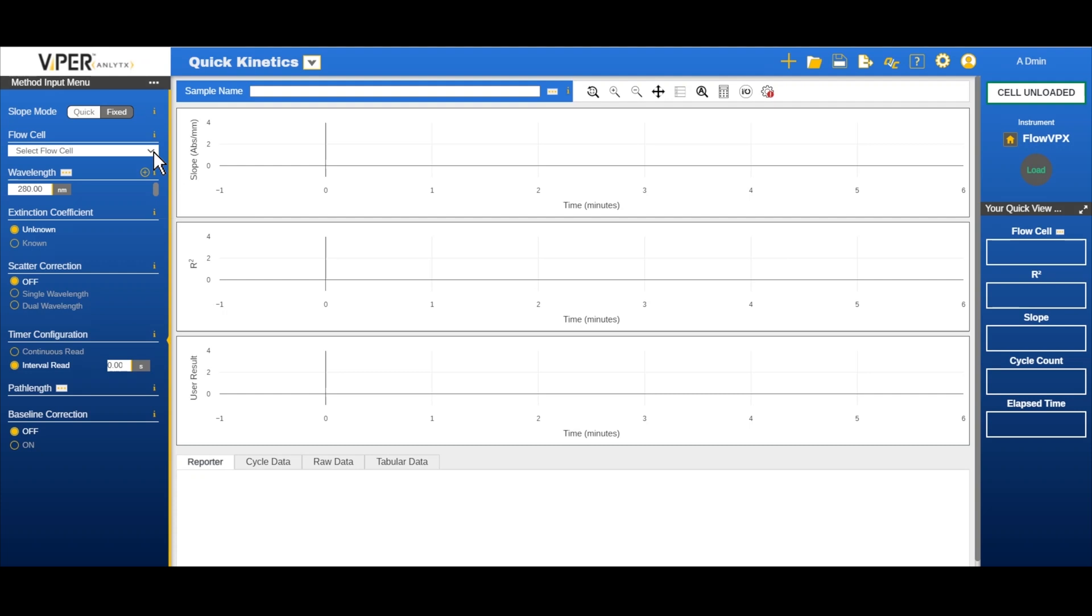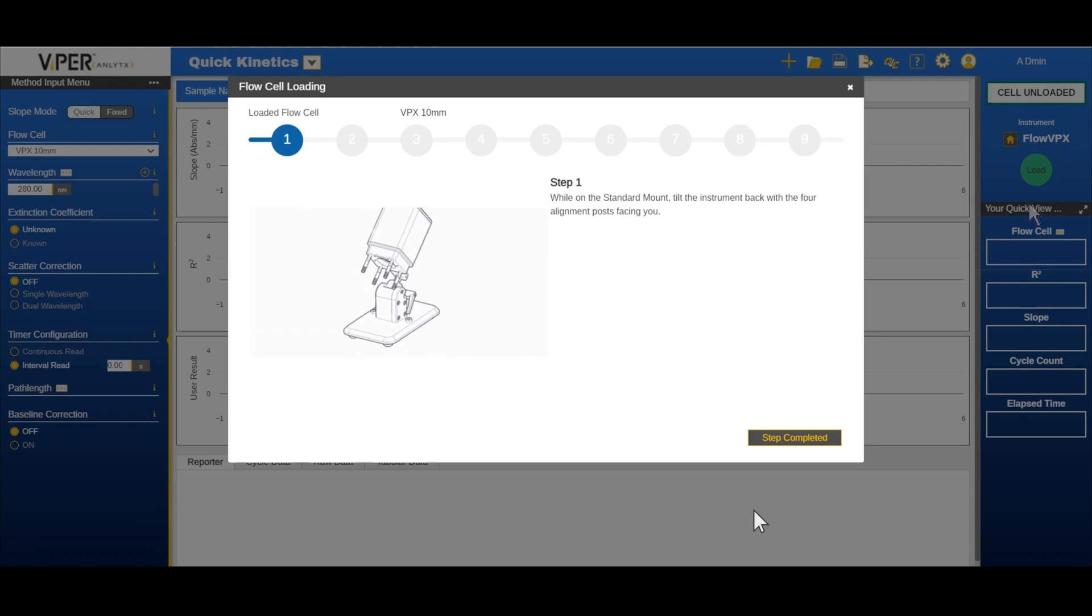Click quick kinetics to launch the application. Select the flow cell from the drop down method input menu. For this video we will be selecting the 10 millimeter flow cell. Click the load button from the instrument control menu. Follow the steps prompted on the screen, then click step completed to proceed.